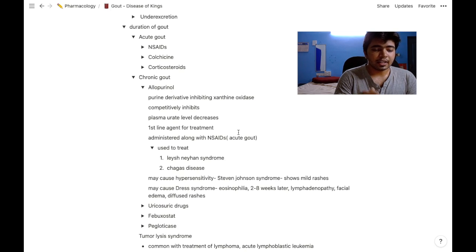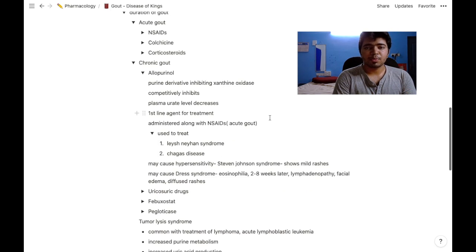This is the first-line treatment. Allopurinol is always administered along with NSAIDs because allopurinol may sometimes revert to acute gout, which will immediately be treated by NSAIDs.